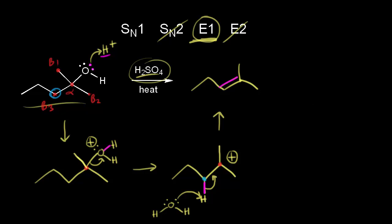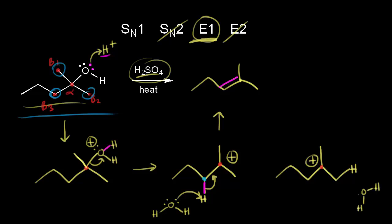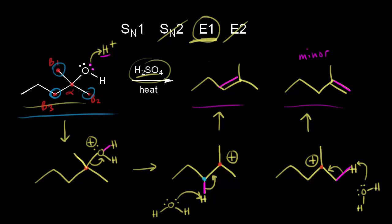Alternatively, we can take a proton from beta one or beta two — both give the same product. Water acts as a base, taking the proton while the electrons move in to form a double bond at that position. This gives a di-substituted alkene, which is the minor product. The tri-substituted alkene from beta three is the more stable and therefore the major product for this E1 reaction.